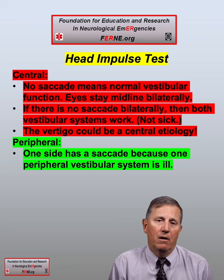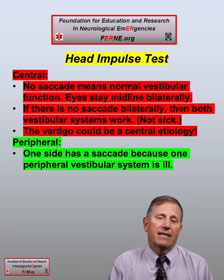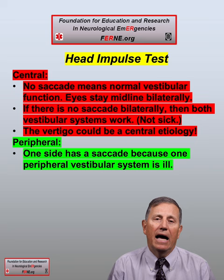In order to assess whether or not this test indicates a peripheral or central etiology, you move the head 15 degrees in each direction. When moving the head back centrally, if there is a corrective saccade of the eyes back to the midline in either direction — if on one side there is a corrective saccade — this suggests a peripheral etiology with one of the vestibular systems not functioning.